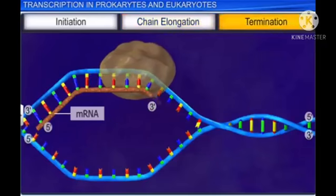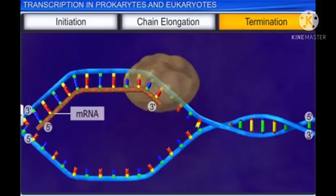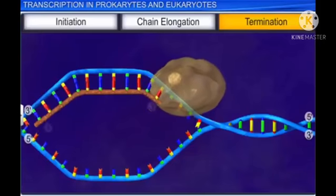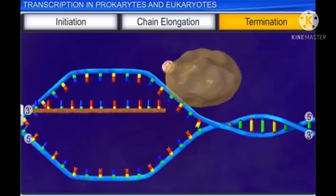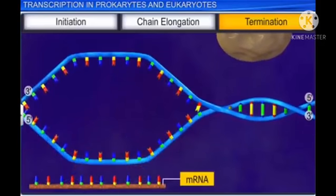The final stage of transcription is termination, in which the polymerase along with the termination factor, represented by rho, reaches the terminator region, and the newly created mRNA falls off along with the enzyme. This marks the end of prokaryotic transcription.